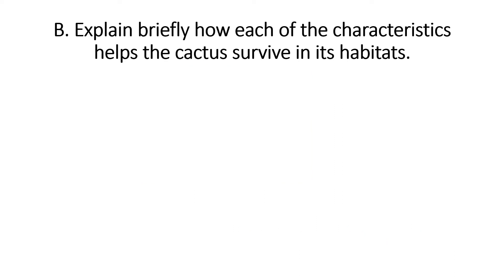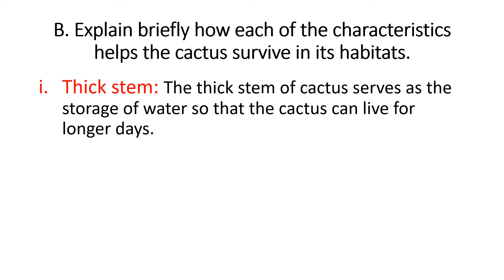Letter B: explain briefly how each of the characteristics helps the cactus survive in its habitat. First, the thick stem — how does the stem help the cactus survive? The stem of the cactus serves as the storage of water, so that the cactus can live for longer days in the desert. We all know that in the desert it doesn't rain, so the stem of the cactus keeps water.